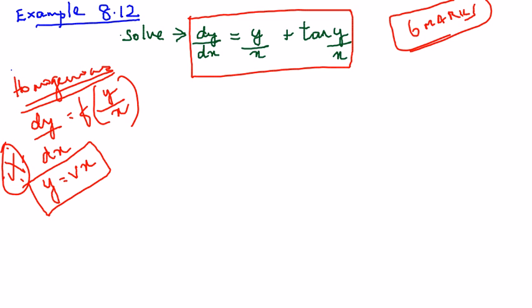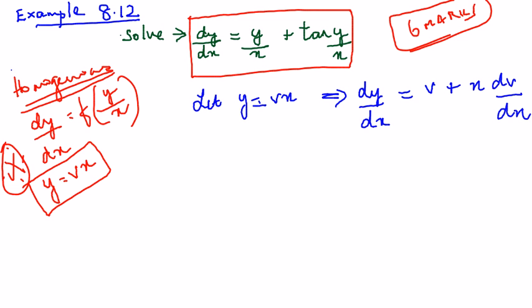So let's put y equals vx here because it's a form y by x. So let y equals vx. As always we have to differentiate with respect to x. So I get dy by dx. How do we differentiate vx? u dv plus v du, right. So it will be v plus x dv by dx.